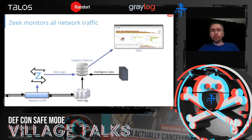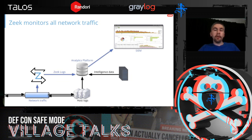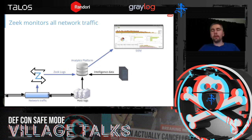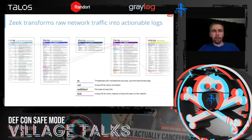When I talk about Zeek data, I'm talking about the representation of network traffic as it's seen on your network, represented in Zeek log data. You can look at the raw Zeek logs, but as you'd normally use in an enterprise — and as you'll use in OpenSOC — that data is forwarded to a SIEM where you can interact with it alongside all other host-based data. Our SIEM of choice for OpenSOC is Graylog.